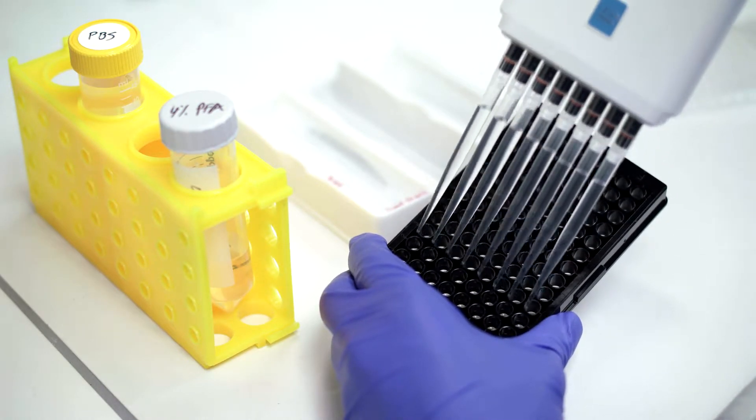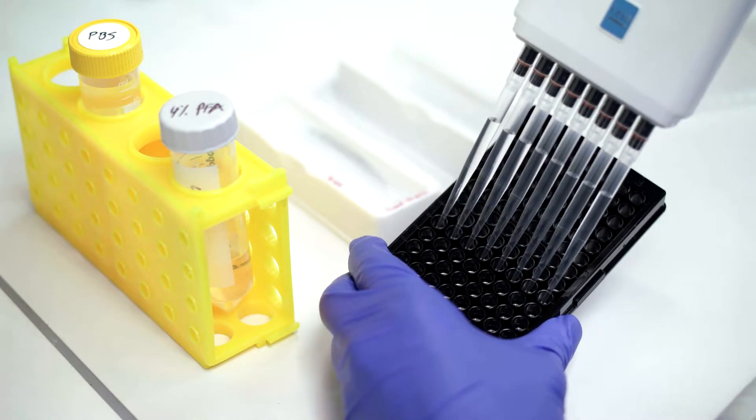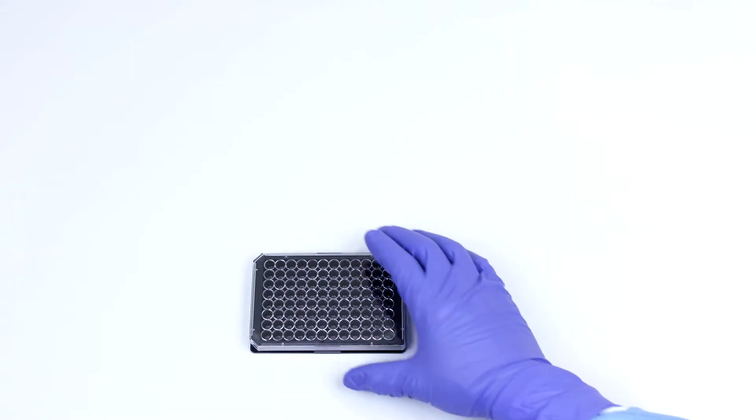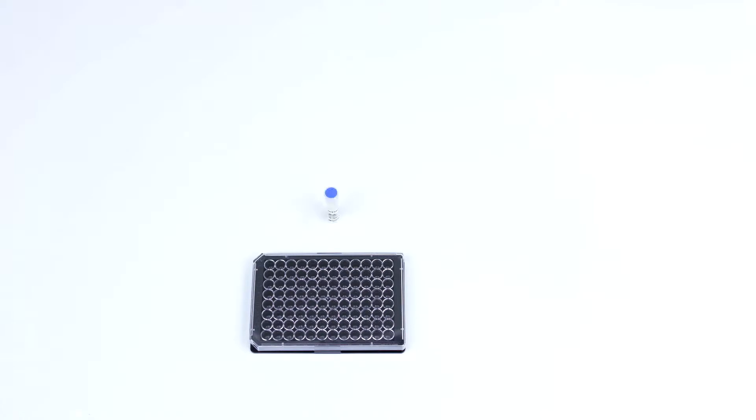To stain your cells, you may use standard staining solutions from detergents to cell surface and nuclear markers. A variety of colorimetric and histological stains are all compatible with the screen matrix.